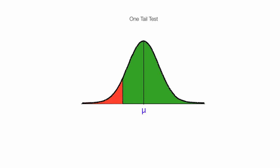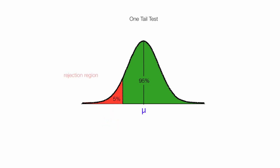With a one-tail test, there's some probability that the sample mean will be in the green area. I'm going to use a 95% probability, and that means there's a 5% chance the sample mean will show up in the red area. This red area is often known as alpha — the Greek letter alpha — and it can also be used as the p-value. It's typically called the rejection region.